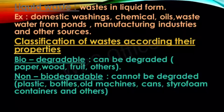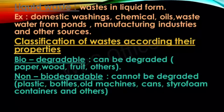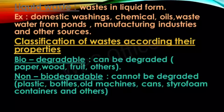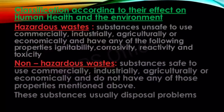Classification of wastes according to their properties gives two types: biodegradable and non-biodegradable. Biodegradable waste can be degraded — examples include paper, food, and fruit. Non-biodegradable waste cannot be degraded — examples include plastic bottles, old machines, cans, and styrofoam containers. The next classification is based on effects on human health and the environment, giving two types: hazardous and non-hazardous.